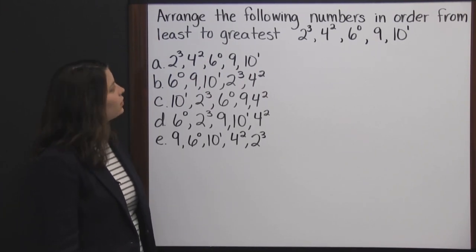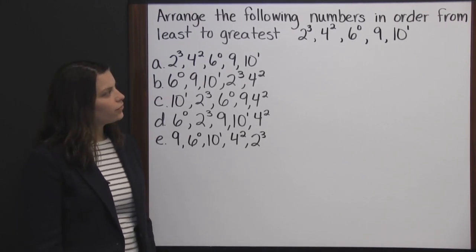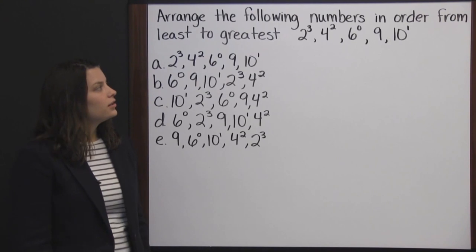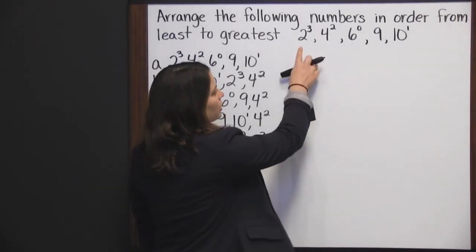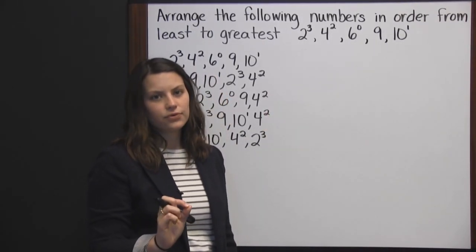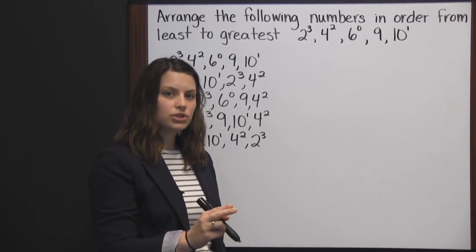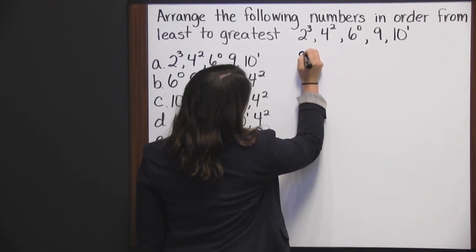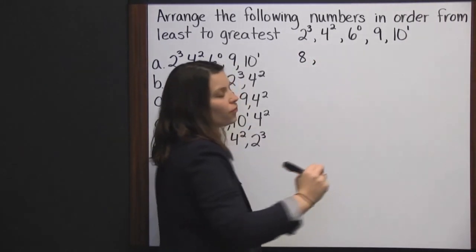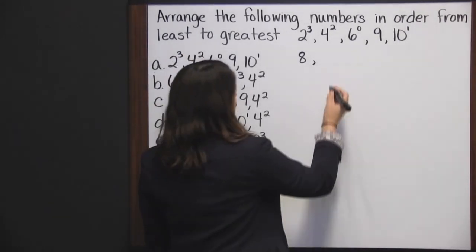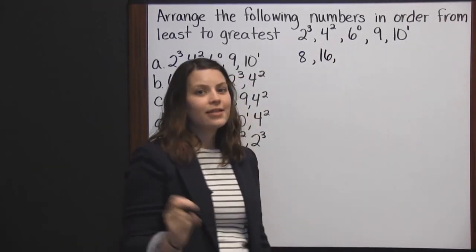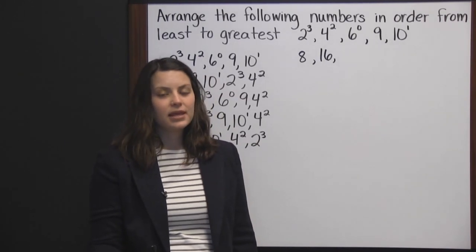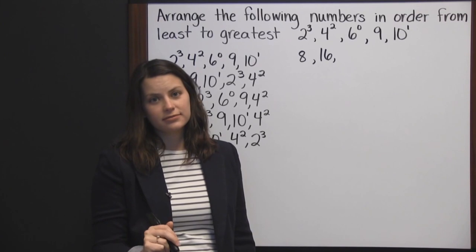Arrange the following numbers in order from least to greatest: two cubed, four squared, six to the zero power, nine, and ten to the first. The first thing we need to do is simplify these numbers. Two cubed means two times itself three times — 2 × 2 × 2 = 8. Four squared is four times itself two times — four times four is sixteen. Now this next one is very interesting: it doesn't matter what this number is — any number raised to the zero power is always one.